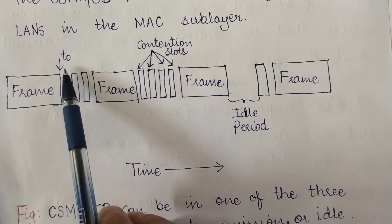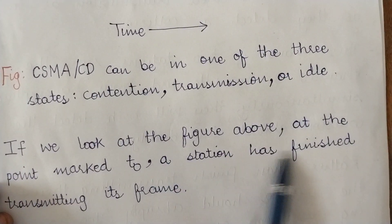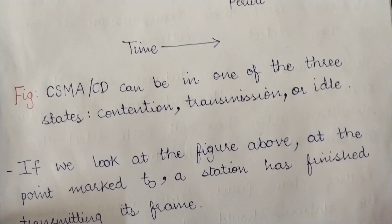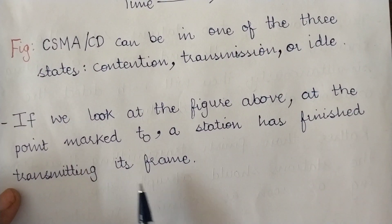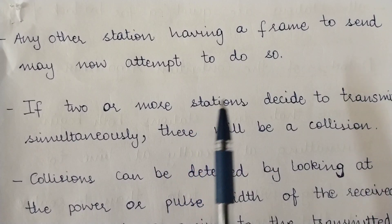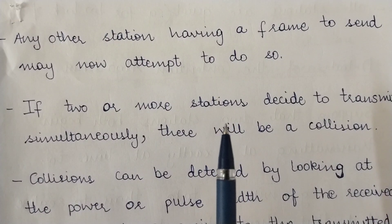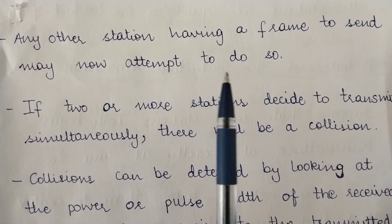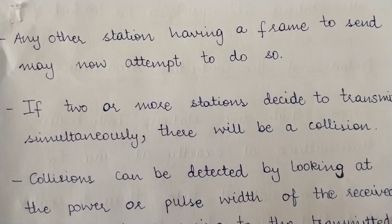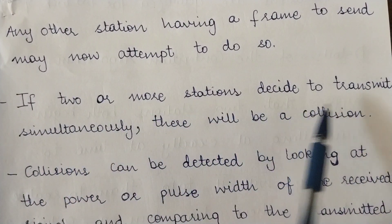In the figure, t0 represents the end of a successfully transmitted frame — the point at which a station has finished transmitting. At t0, the channel becomes idle again, so any other station with a frame to send may now attempt to transmit. If at time t0 two or more stations decide to transmit simultaneously, there will of course be a collision.